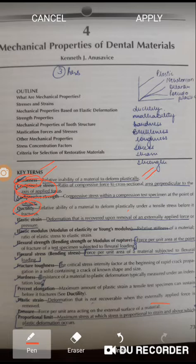Then ductility - again very much important - which is the relative ability of a material to deform plastically under tensile stress before it fractures.